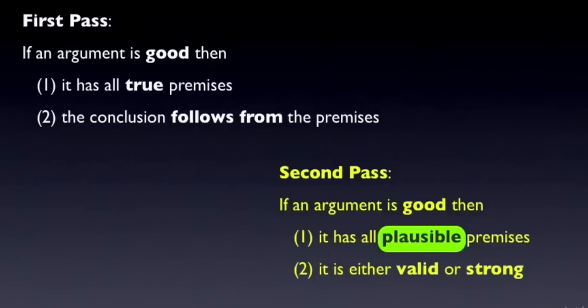This helps to distinguish a plausible premise from a reading of true premise that's defined in terms of correspondence with the objective facts. We'd like our premises to be true in this sense, but what really matters to argument evaluation is whether they're regarded as plausible or not by the intended audience of the argument.